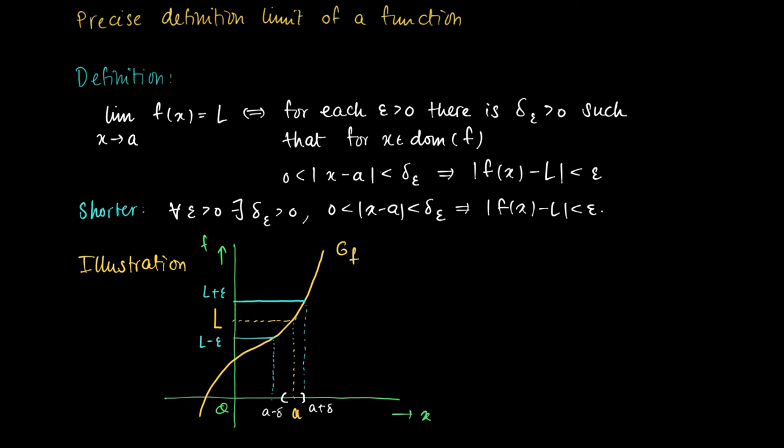So how close should we... If we're close enough to A, then we see that all elements x belong to A minus delta, A plus delta, so a symmetrical interval around A are mapped onto values which are inside the interval L minus epsilon, L plus epsilon.